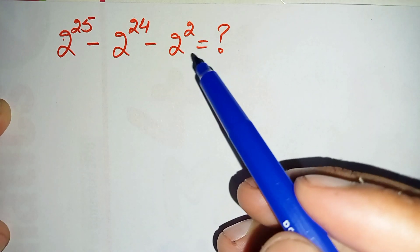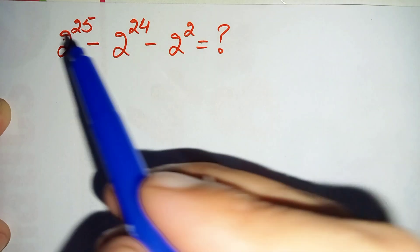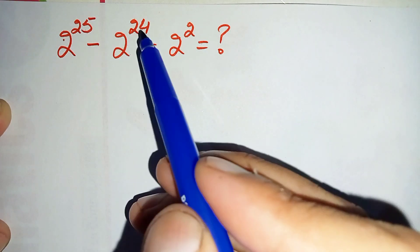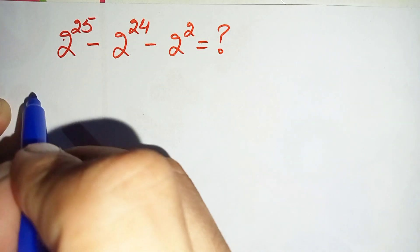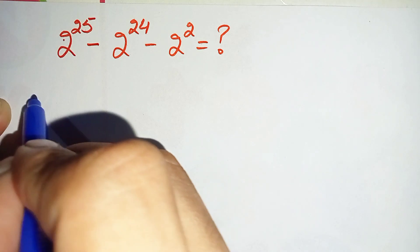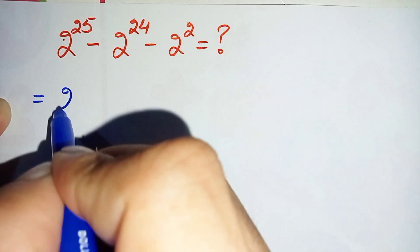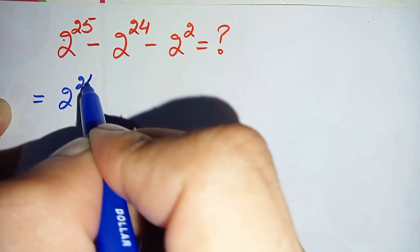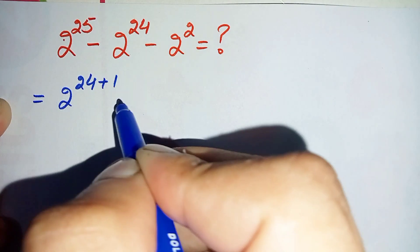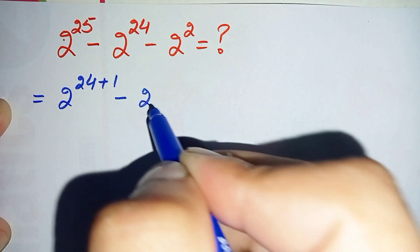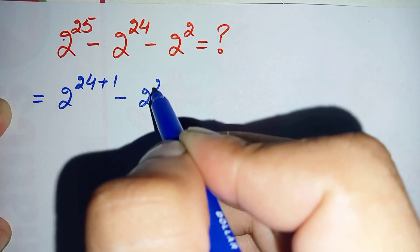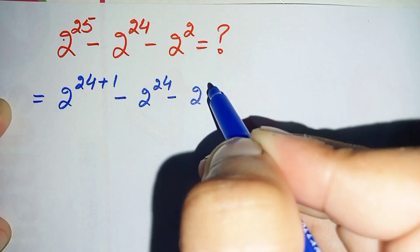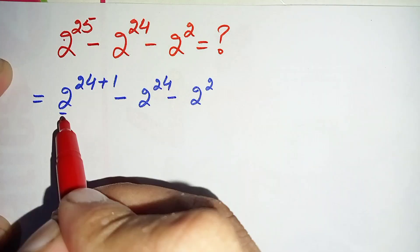First of all, we will change 25 to the sum of 24 plus 1. So this equation will become 2 raised to power 24 plus 1, minus 2 raised to power 24, minus 2 raised to power 2.